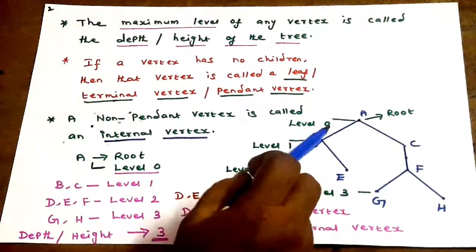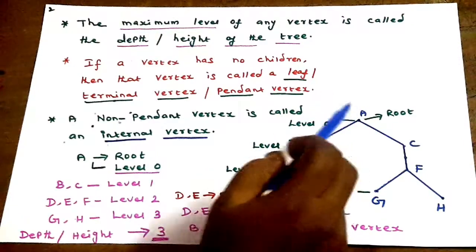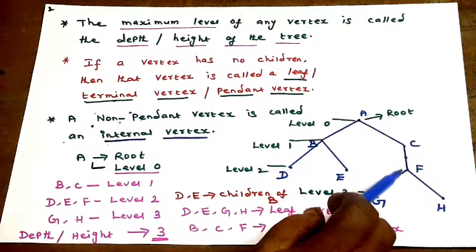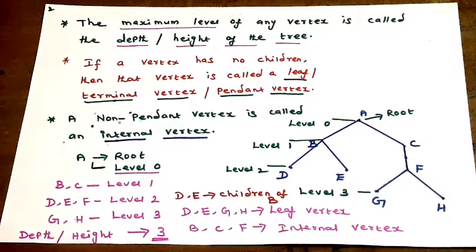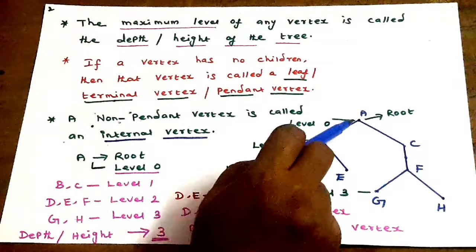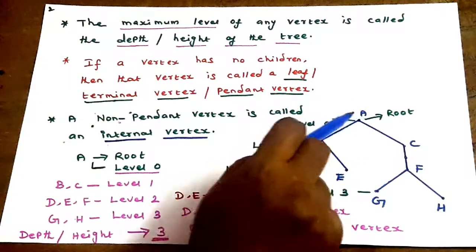The vertices inside the tree, including the root node, are A, B, C, and F. These are called internal vertices.